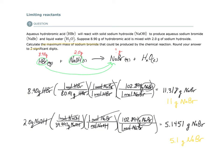So which one of these reactants is our limiting reactant? Which one is limiting how much product we can make? That would be sodium hydroxide. Because it gives us the least amount of product, 5.1 grams versus 11 grams.